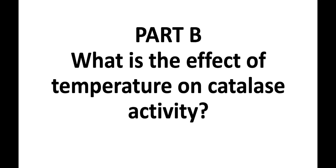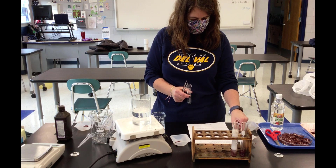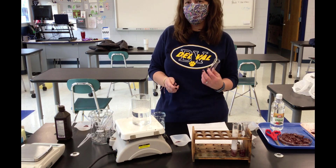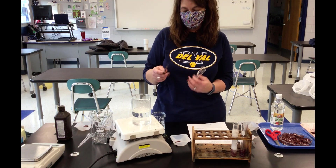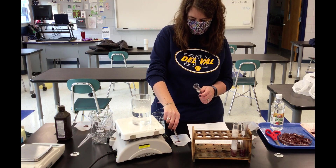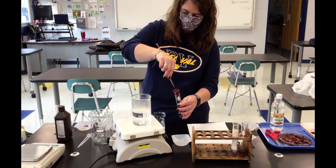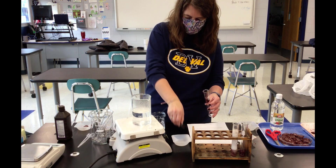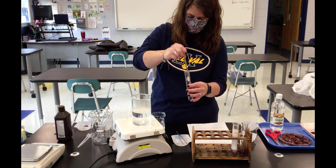We are now moving on to Part B of the lab: the effect of temperature on catalase activity. We're going to boil some liver. We have a hot water bath — nice and steamy. We take a piece of liver and put it down in the bottom of the test tube. Then we place it in the beaker with a little water in the hot water bath to basically boil or steam the liver.